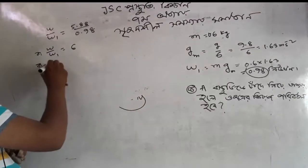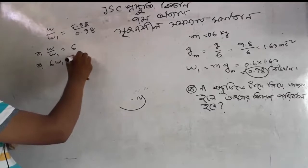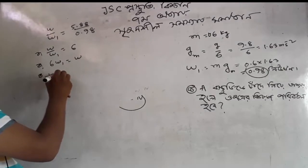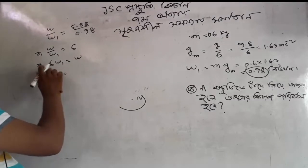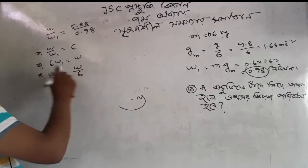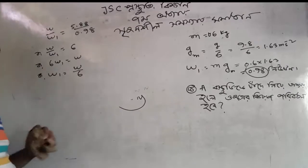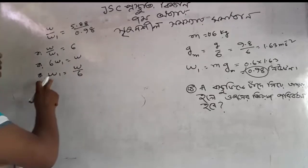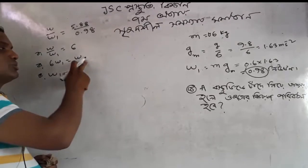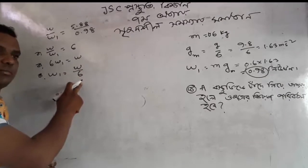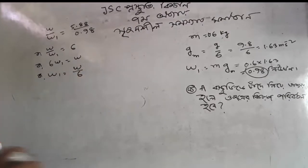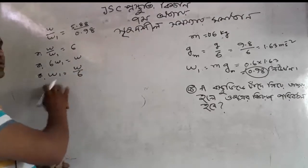6 times W1 equals W. So what is W1? W1 equals W divided by 6. So what is it? It is 100.